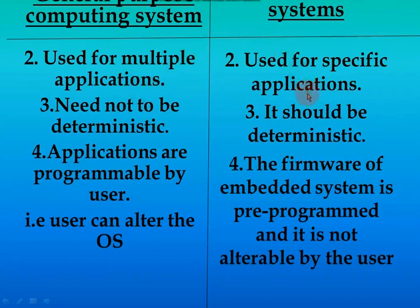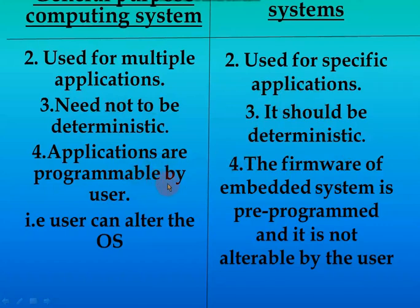The second point: GPCS are used for multiple applications, but embedded systems are used for specific applications only. Third point: GPCS need not be deterministic — meaning we cannot expect a perfect or accurate output from general purpose computing systems. But for embedded systems, it should be deterministic. Since we are using special purpose hardware and specific software, the output will also be deterministic.